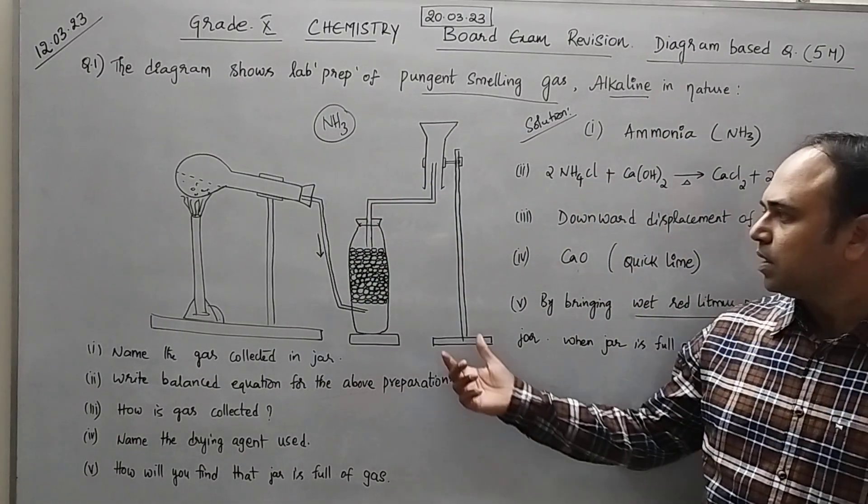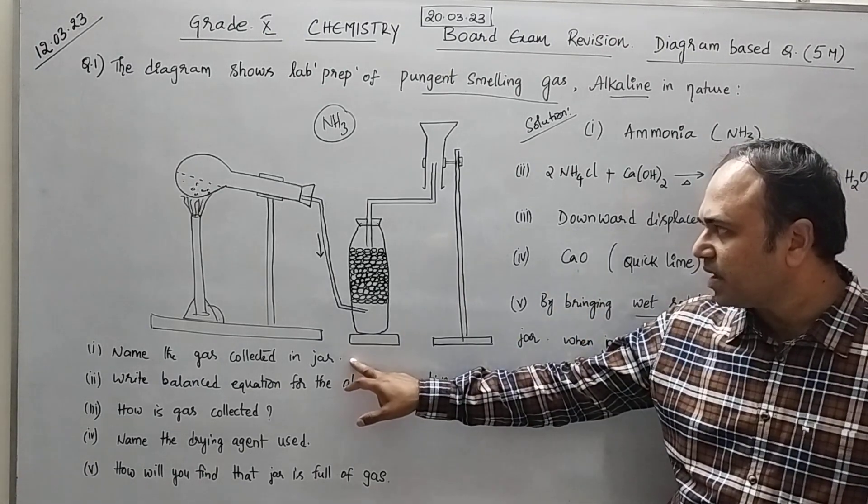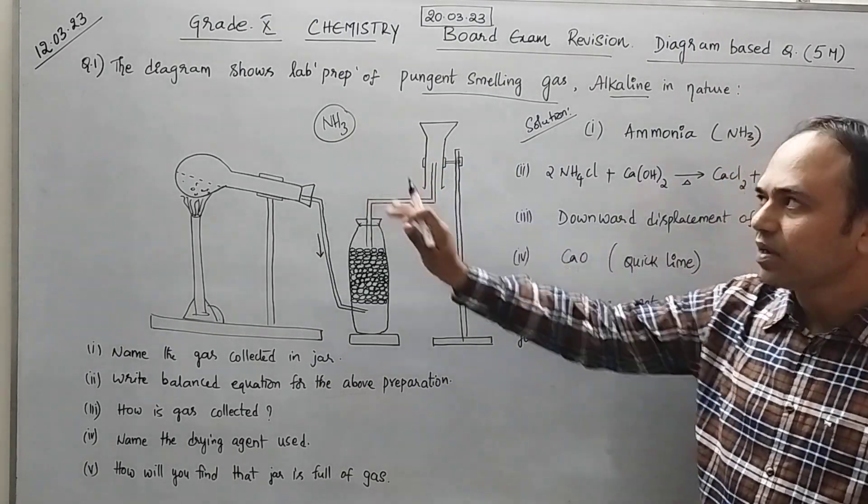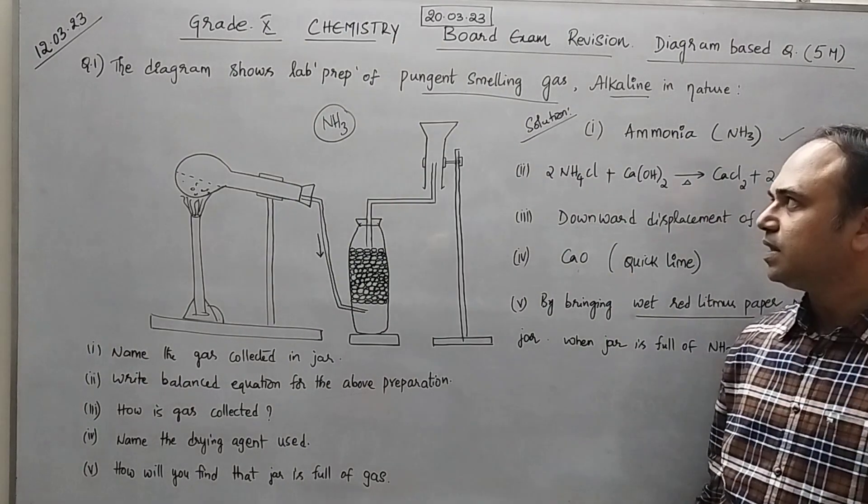Now what are the questions given? From this diagram you need to answer the questions. First one is name the gas collected in the jar. So definitely first one ammonia. So we have written the answer here. Ammonia gas is collected in the jar.